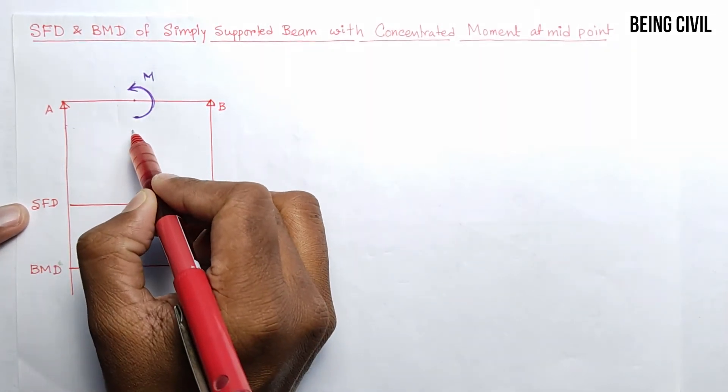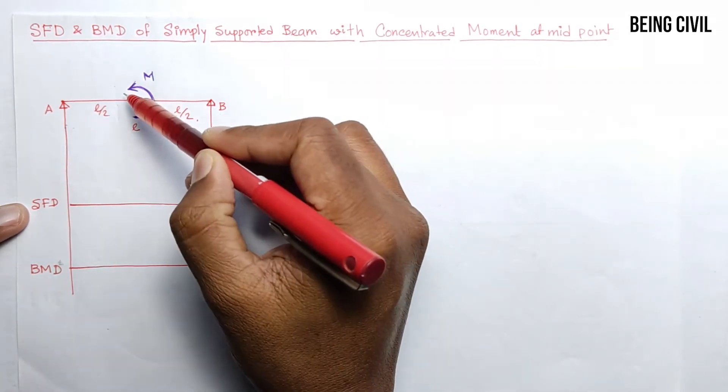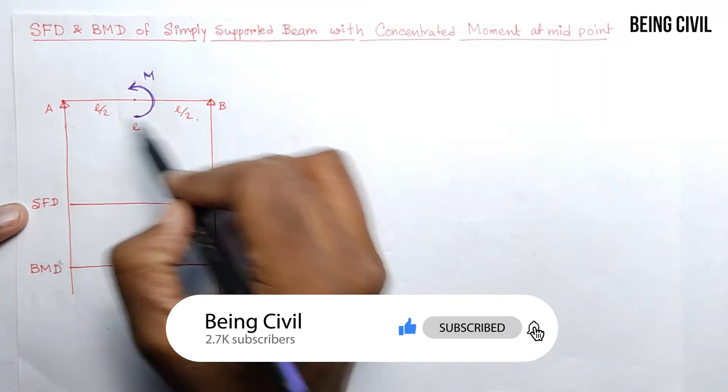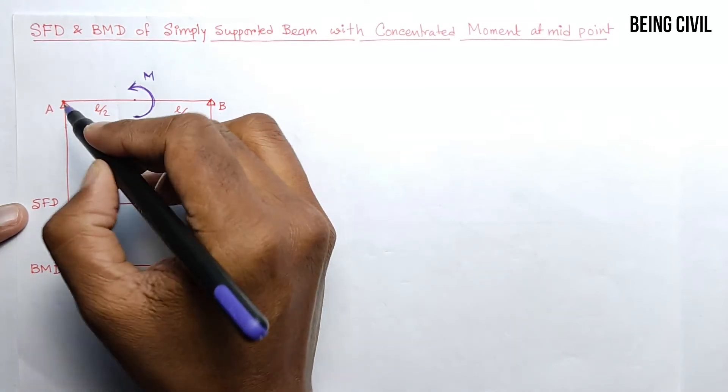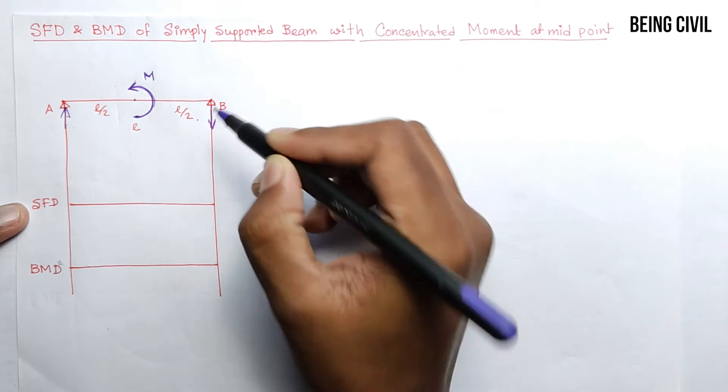The length of the beam is L, and this is L/2 and this is L/2. So this moment is anti-clockwise in nature, so the reactions at A and B will be such that they create a clockwise couple. The reaction here will be upward in direction and here it is downward direction, so these two forces create a clockwise couple.